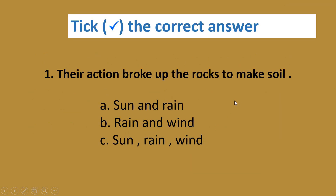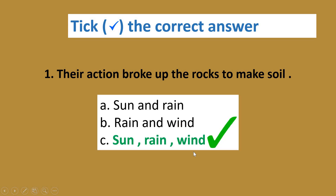Now you have to pick the correct answer. First question: their action broke up the rocks to make soil. The three options are: sun and rain, rain and wind, or sun, rain, and wind. The correct answer is sun, rain, and wind — all three.